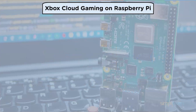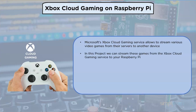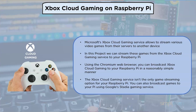Xbox Cloud Gaming on Raspberry Pi: Microsoft's Xbox Cloud Gaming service allows you to stream video games from their servers to another device. Using the Chromium web browser, you can broadcast Xbox Cloud Gaming to your Raspberry Pi. This project shows you how to turn your Raspberry Pi into a pure Xbox Cloud Gaming machine. You can also broadcast games using Google's gaming service.